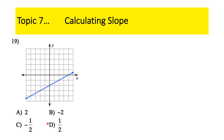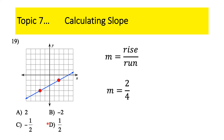Next topic: calculating slope. A number of you missed this one. You have to first pick lattice points where the blue line intersects where black grid lines meet. Don't choose the ends of the arrows — pick a clear lattice point. Slope is rise over run — how much you go up/down over how much you go left/right. Up is positive, down is negative; right is positive, left is negative. Going from the left dot to the right dot: up 2, over 4 — that's 2/4 which reduces to 1/2.